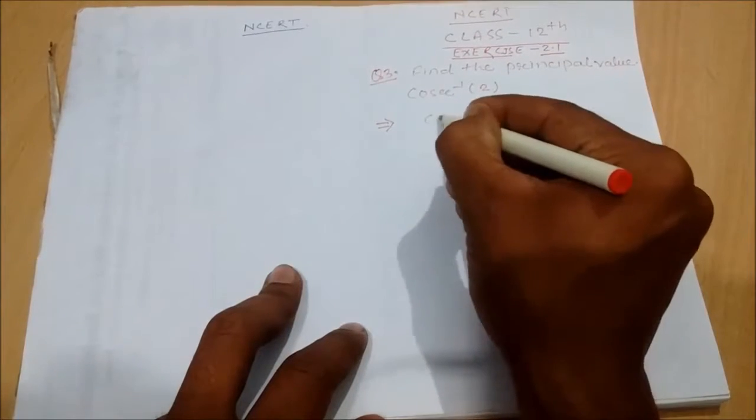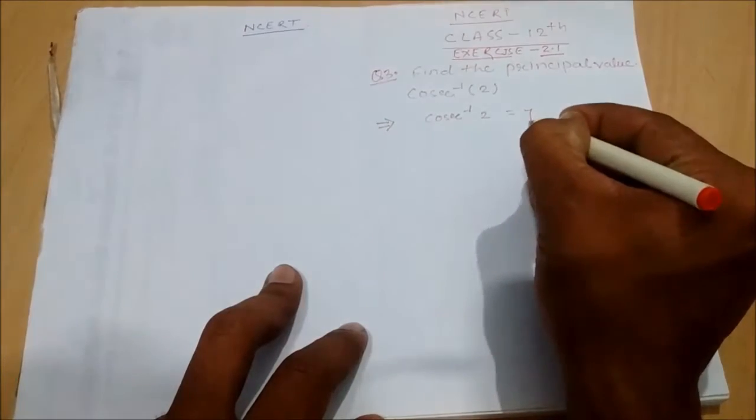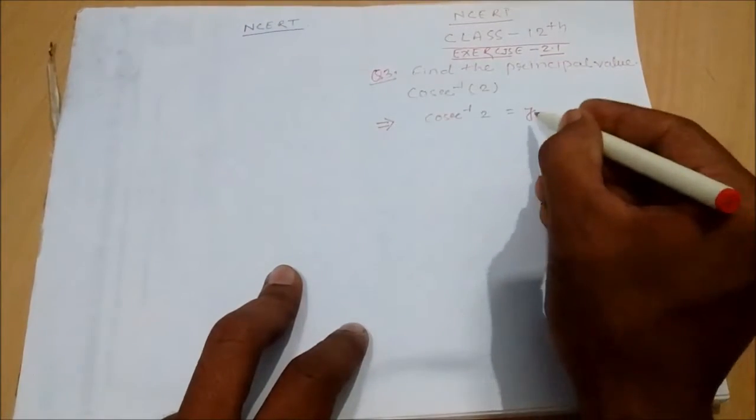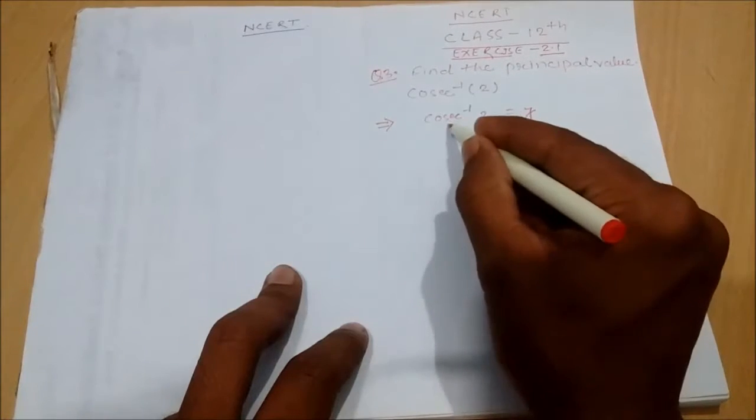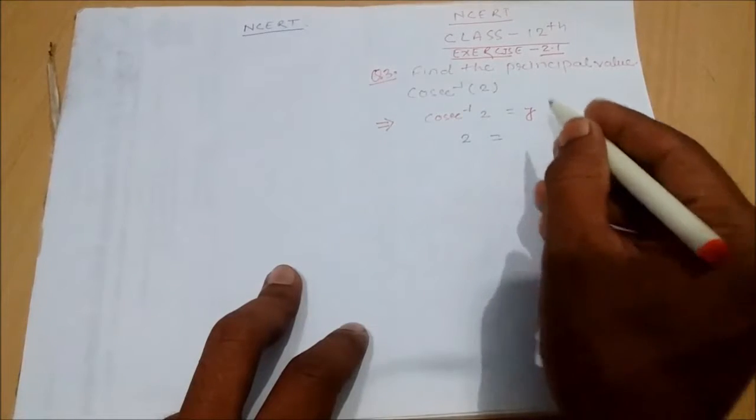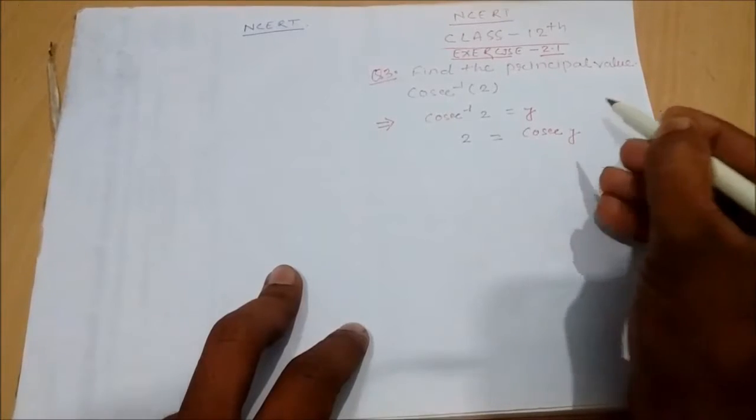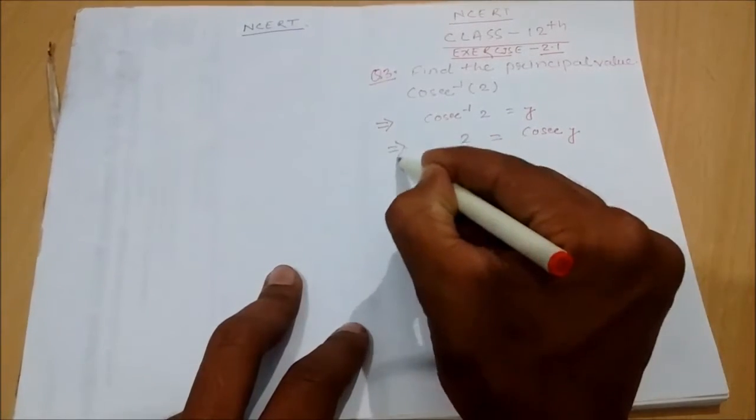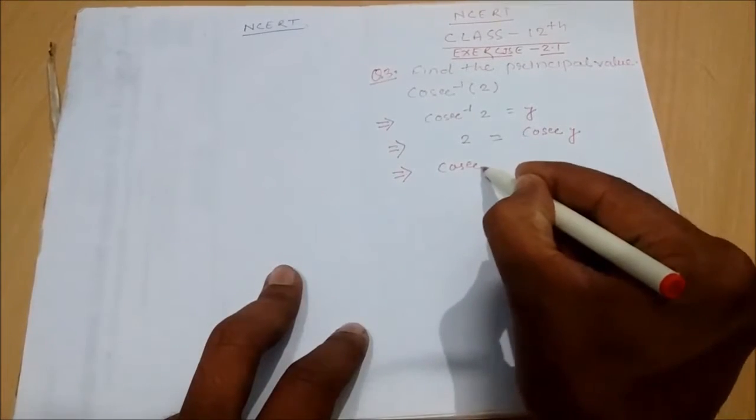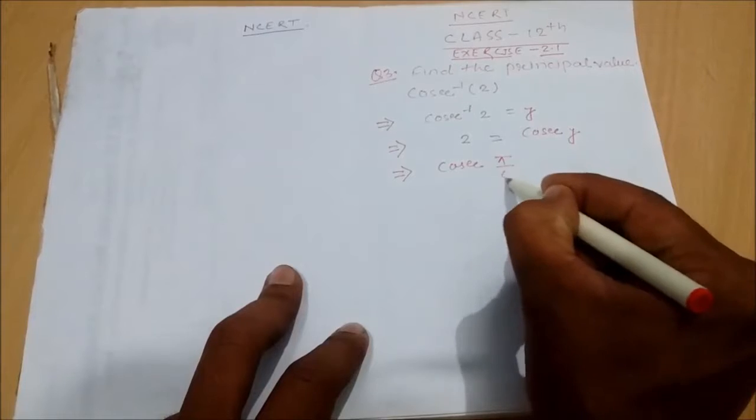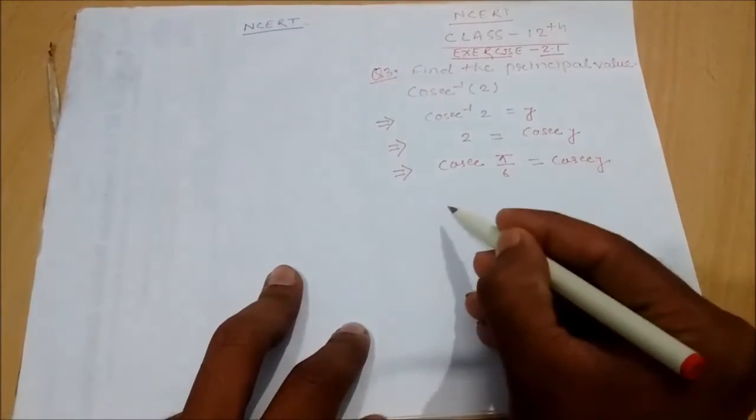So the process: let cosec inverse 2 equal to y. Then cosec y equals 2. What will be the value? We get π/6, which equals cos y. Then the other thing is...